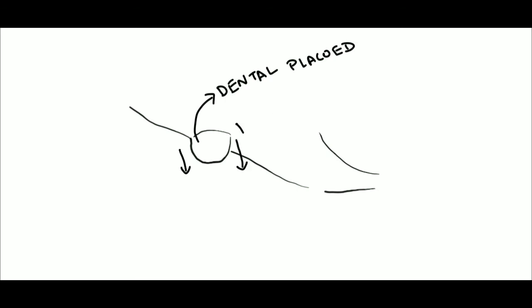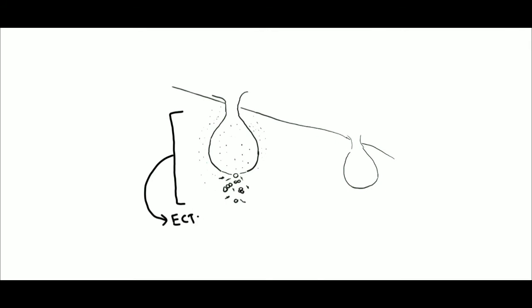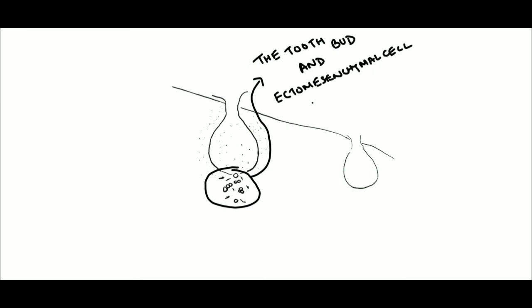The dental plicoids descend towards the ectomesenchyme to form a bud, which is why this is called the bud stage. The ectomesenchyme then clusters around this tooth bud, and the tooth bud and ectomesenchymal cells exchange signals, thus the tooth bud undergoes morphogenesis.